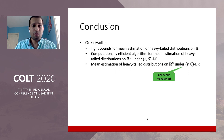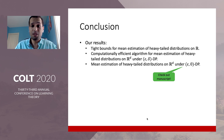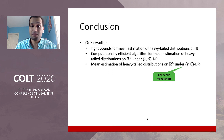To conclude: we give tight bounds for mean estimation of heavy-tailed distributions in one dimension. We also give computationally efficient algorithms for mean estimation of heavy-tailed distributions in high dimensions under Epsilon Delta DP. Finally, we give mean estimation of heavy-tailed distributions in high dimensions under Epsilon-zero DP — something not covered in this presentation, but please feel free to check out the manuscript.